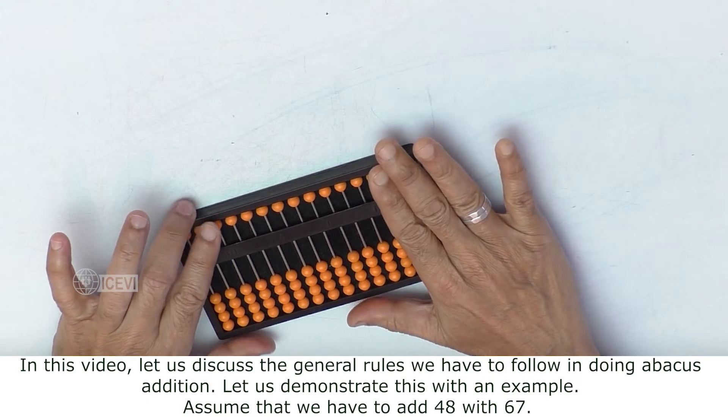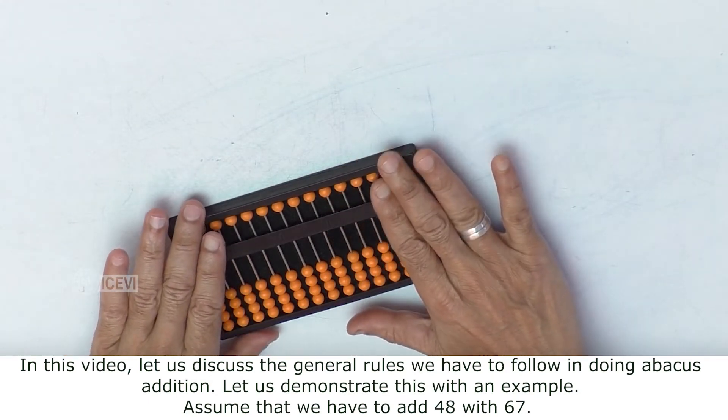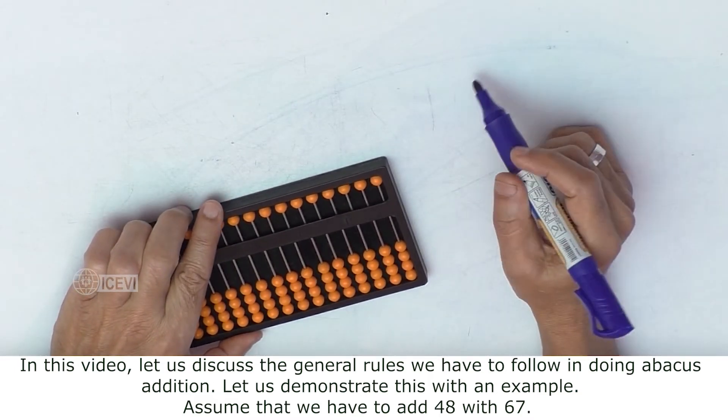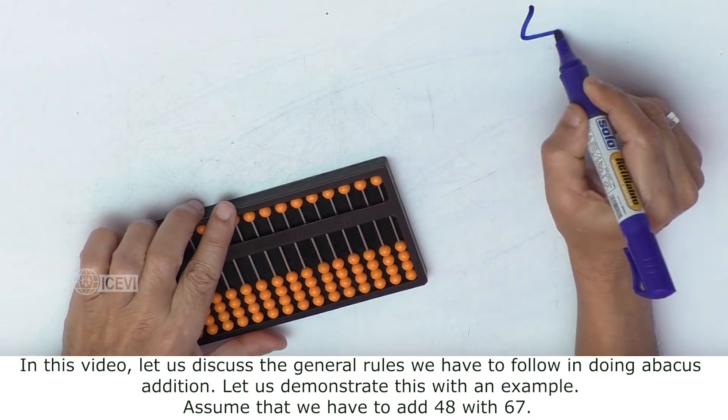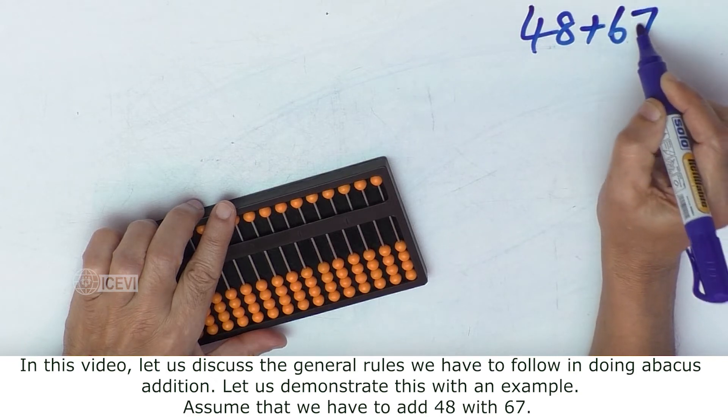In this video, let us discuss the general rules we have to follow in doing abacus addition. Let us demonstrate this with an example. Assume that we have to add 48 plus 67.